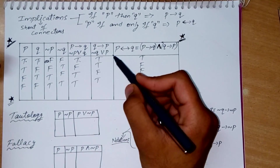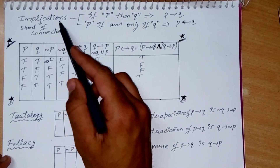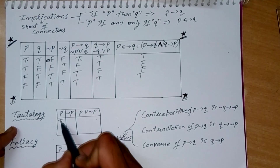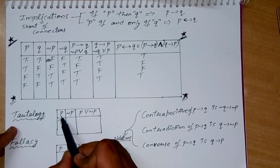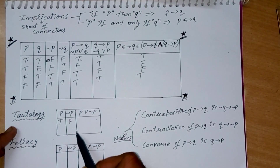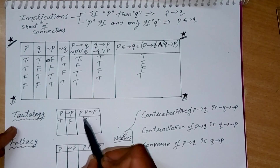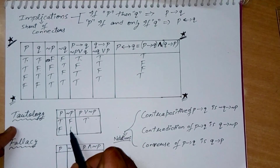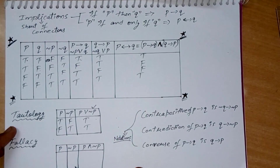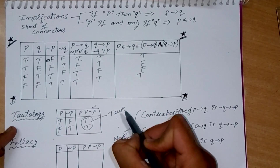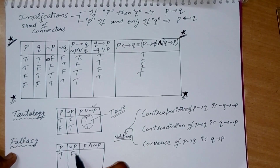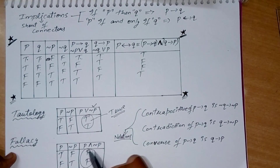Coming to tautology, which is an important topic: if I put P as true, negation of P becomes false, and P OR negation of P comes out to be true. This is an example of a tautology — the output is always true. Fallacy is the opposite — the output is always false.